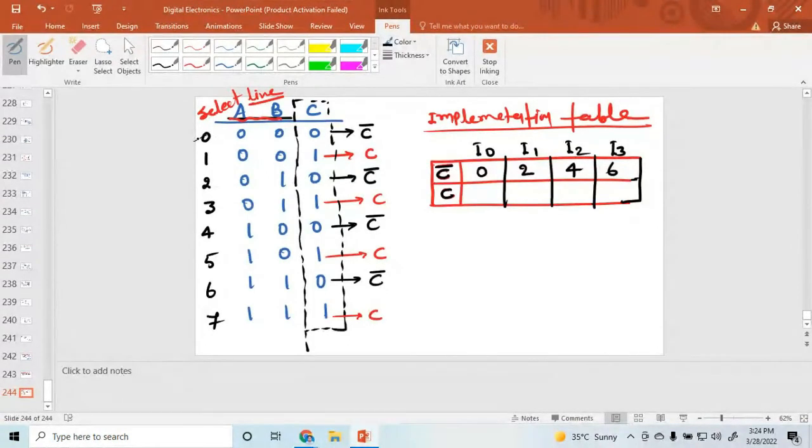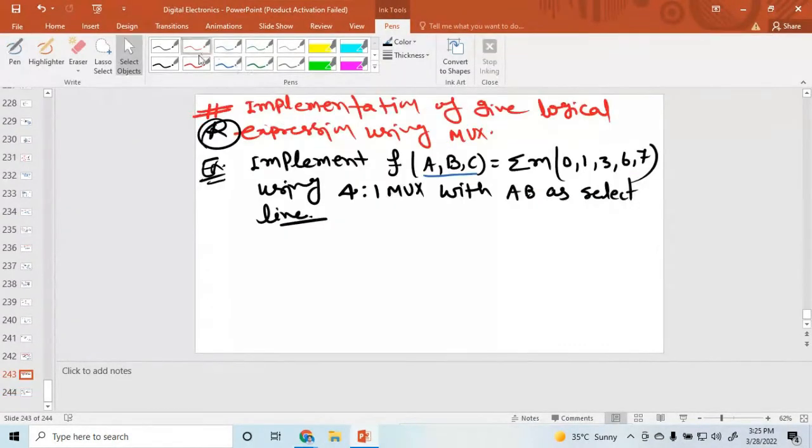Where is the c bar? In the 0. Here c bar 0, c bar 2, 4, and 6. Just see that c bar. And where is the c? In the place of 1, 3, 5, and 7. Any query?